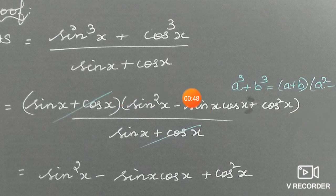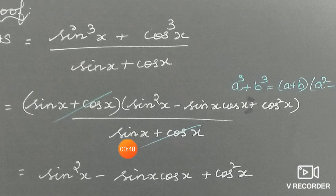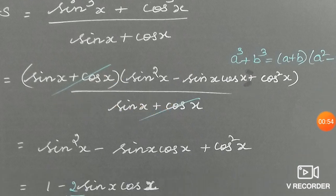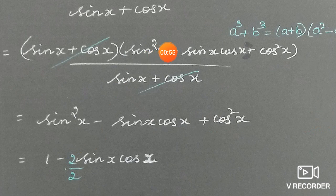Now, in both the numerator and denominator, sin x plus cos x gets cancelled. So, we have sin square x minus sin x cos x plus cos square x.